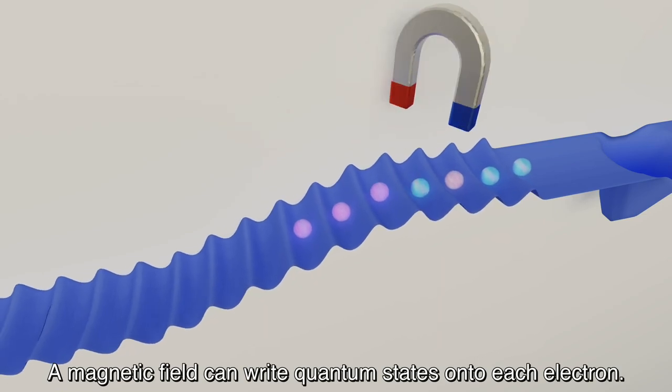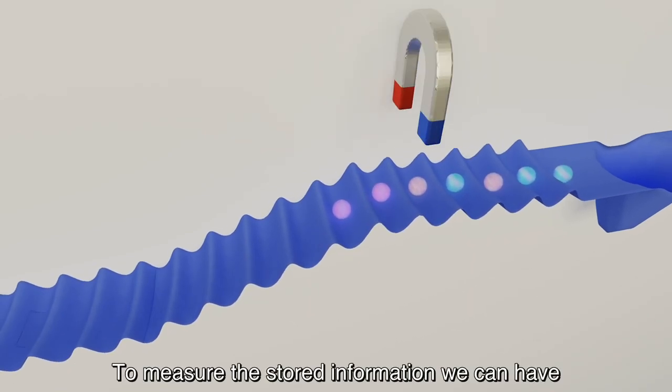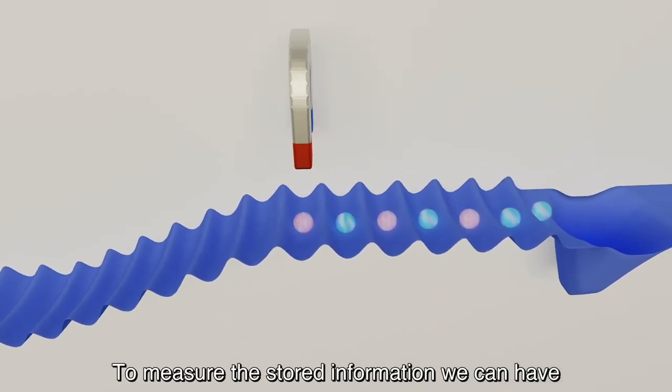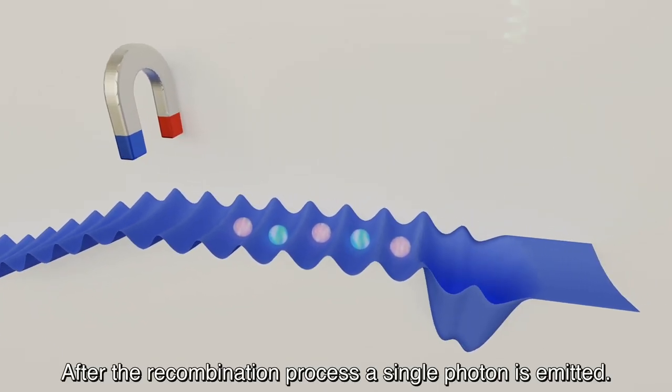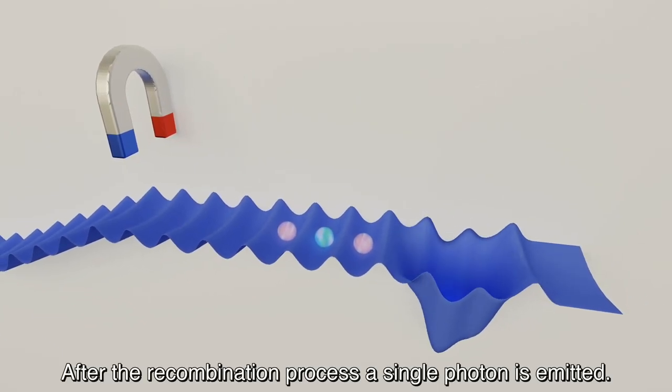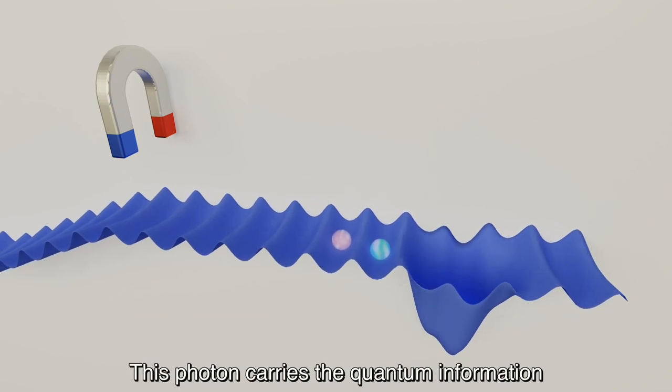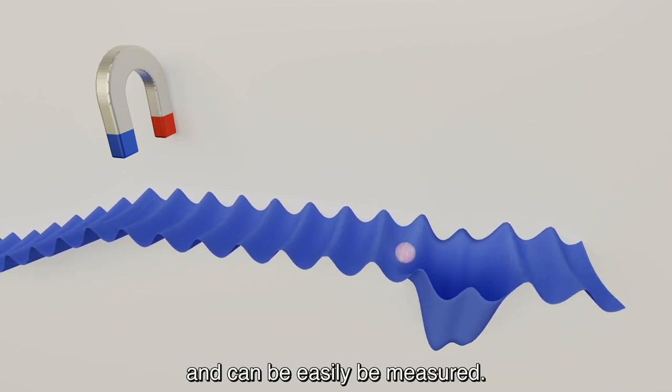A magnetic field can write quantum states onto each electron. To measure the stored information, we can have electrons recombine at a precise location. After the recombination process, a single photon is emitted. This photon carries the quantum information and can easily be measured.